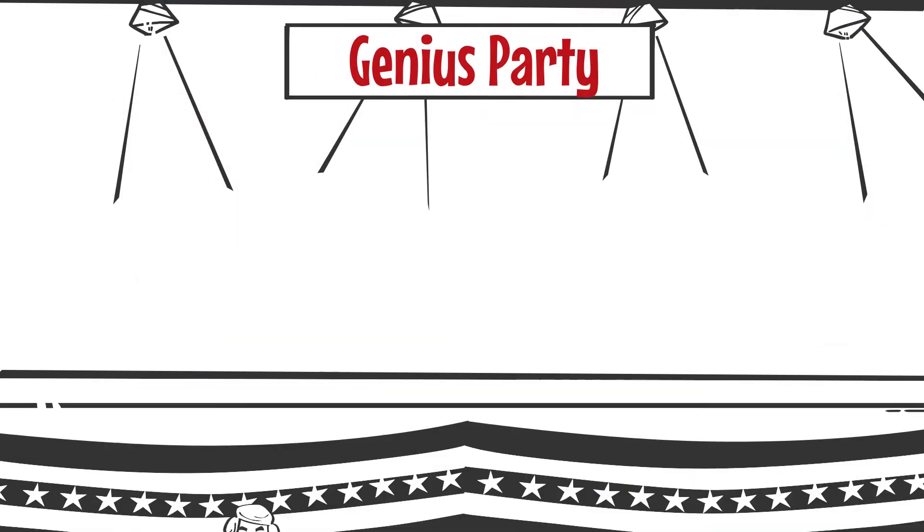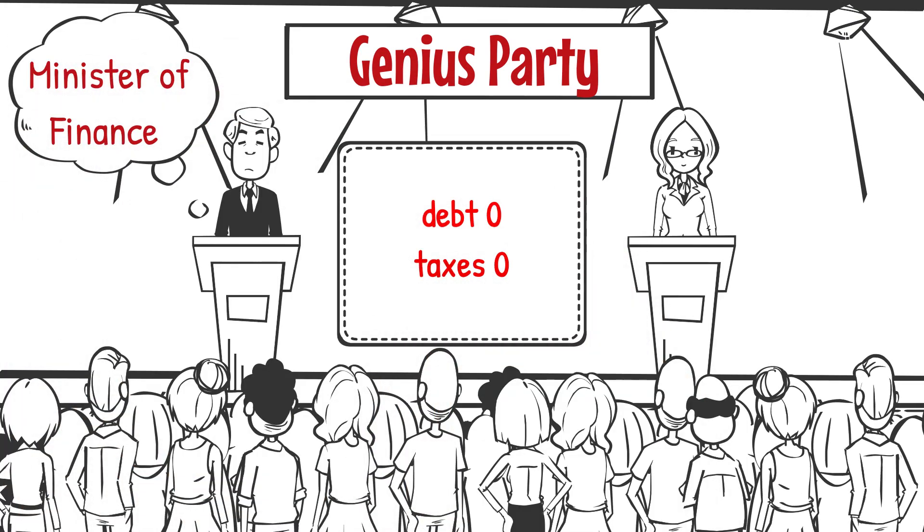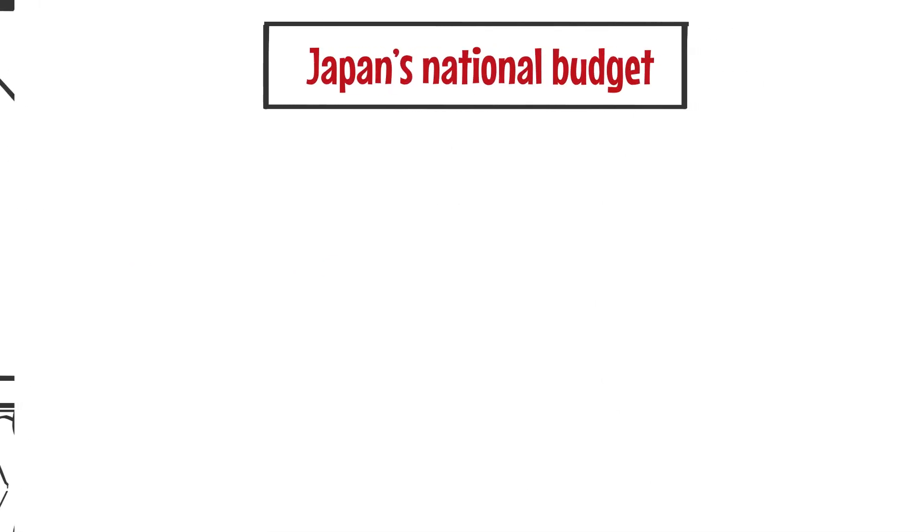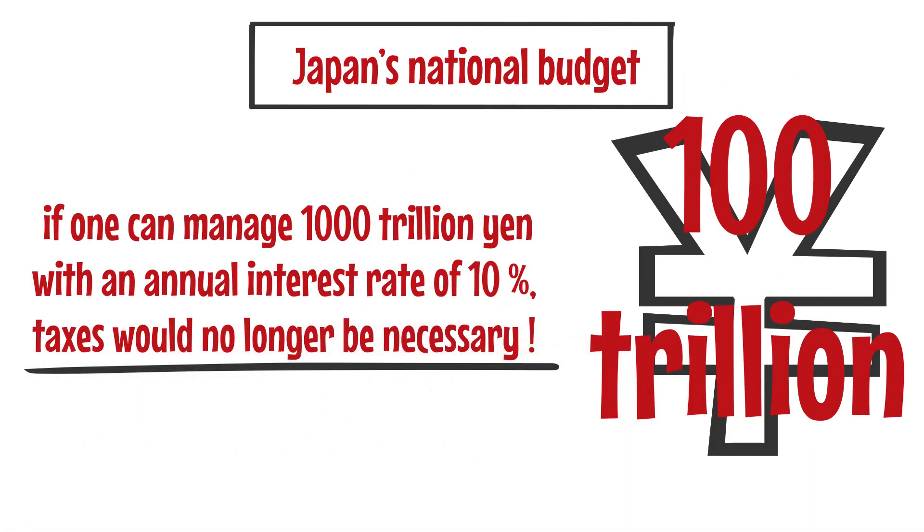So, what would happen when the Genius Party becomes the ruling party? Well, for starters, if a genius of asset management becomes the Minister of Finance, the nation's debts will be cut down to zero, and thus, so will taxes. For example, Japan's national budget is 100 trillion yen. But if one can manage 1,000 trillion yen with an annual interest rate of 10%, taxes would no longer be necessary. If a nation with zero taxes were to exist, wealthy people from all around the world would move there, creating an even wealthier nation.